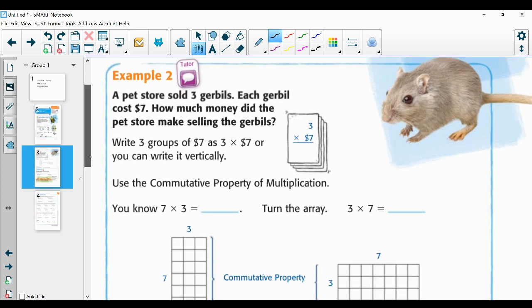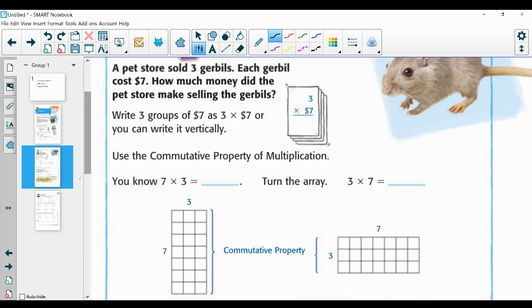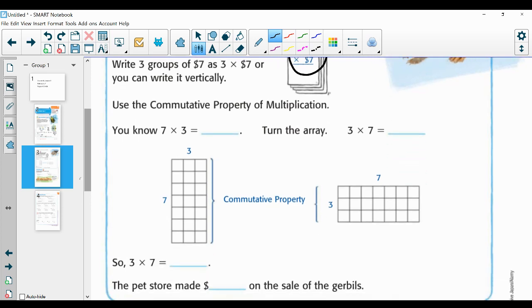So I'm going to write three groups of seven dollars as three times seven dollars. Or you can write it vertically, just like they did here. Okay. We're going to use the commutative property of multiplication. So we know, or you know, seven times three equals twenty-one. So you can just turn the array and three times seven is twenty-one.